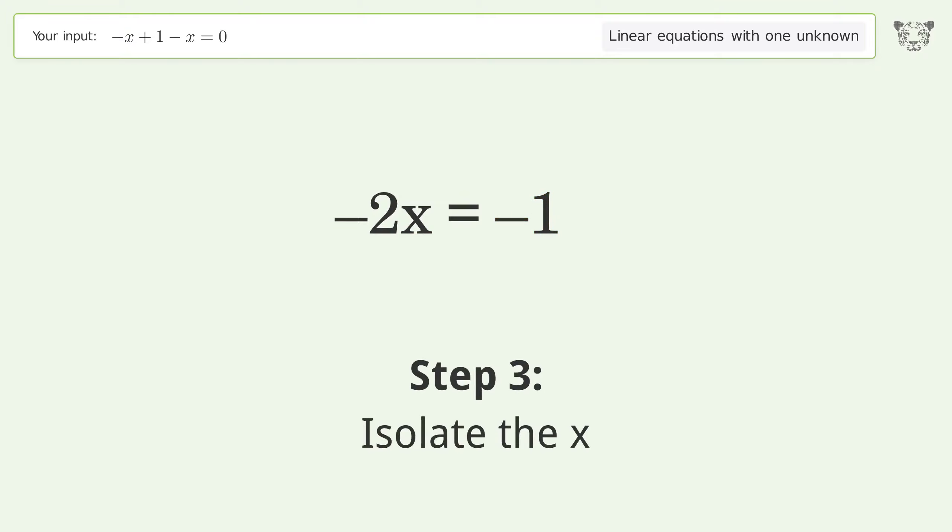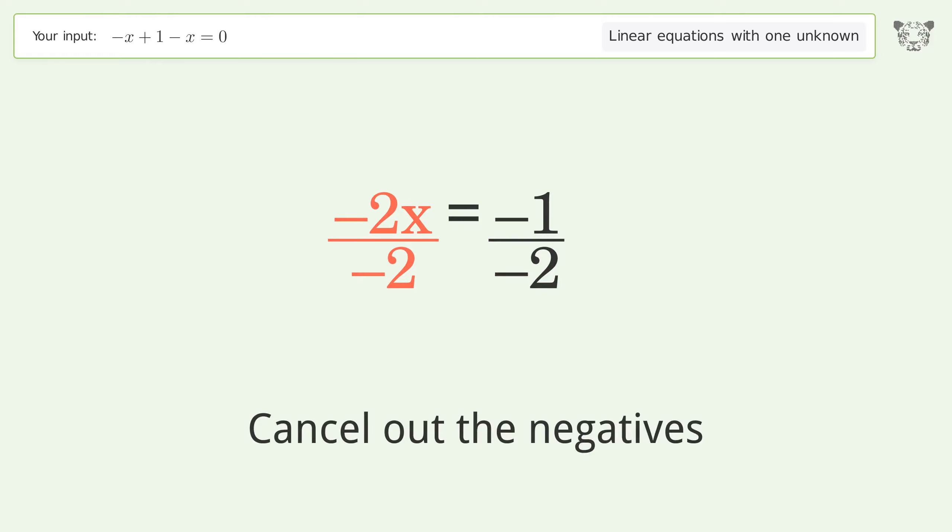Isolate the x. Divide both sides by negative 2. Cancel out the negatives.